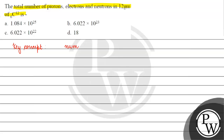Number of moles is basically equal to number of atoms divided by Avogadro's number.